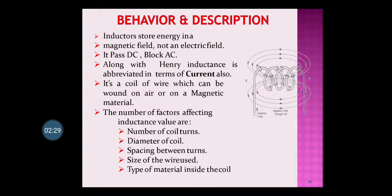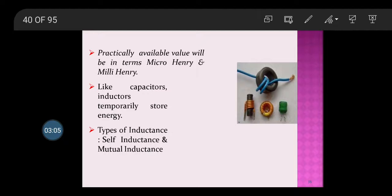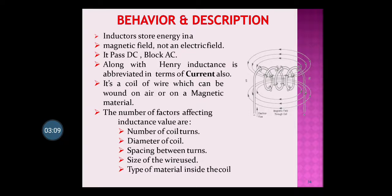The inductor passes DC, and along with Henry, inductance is also rated in terms of current. An inductor is fabricated as a coil of wire — wire is a conducting material — which can be wound on air or on a magnetic material. The magnetic material forms the core, and the conducting wire is wound around it as shown.